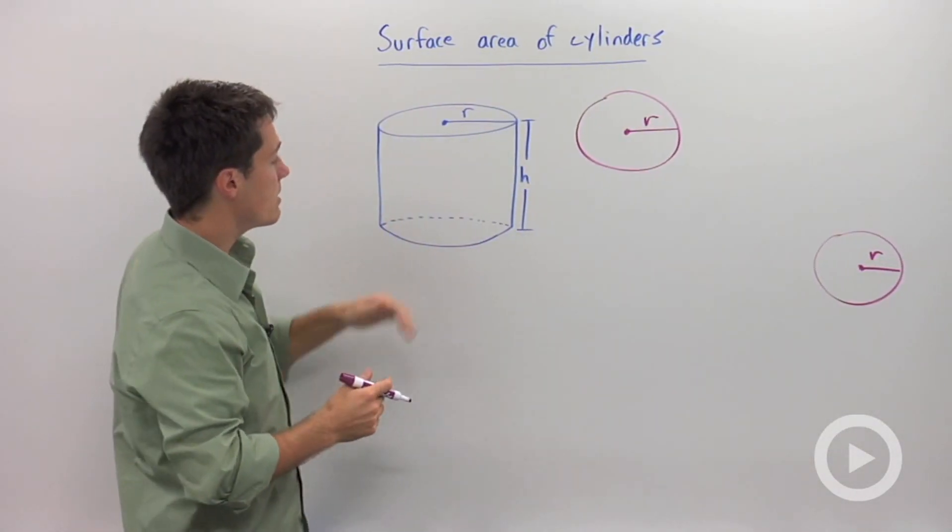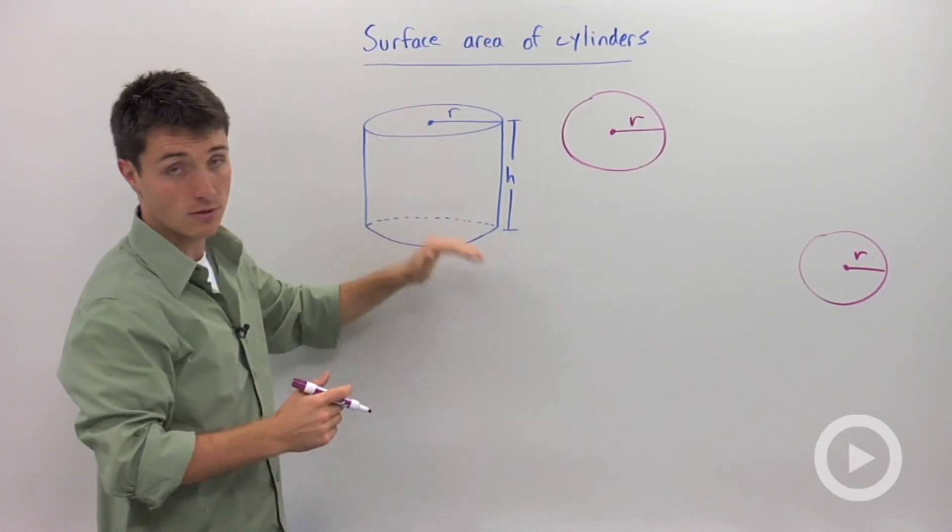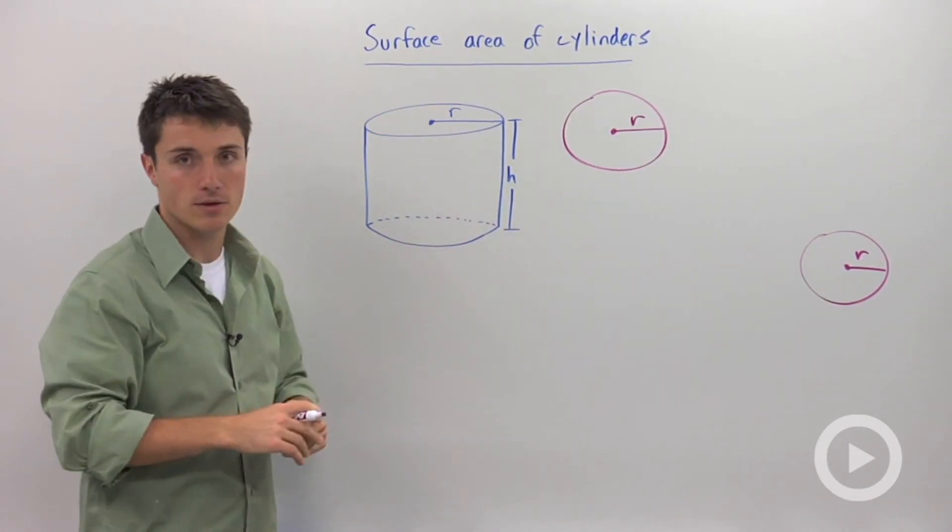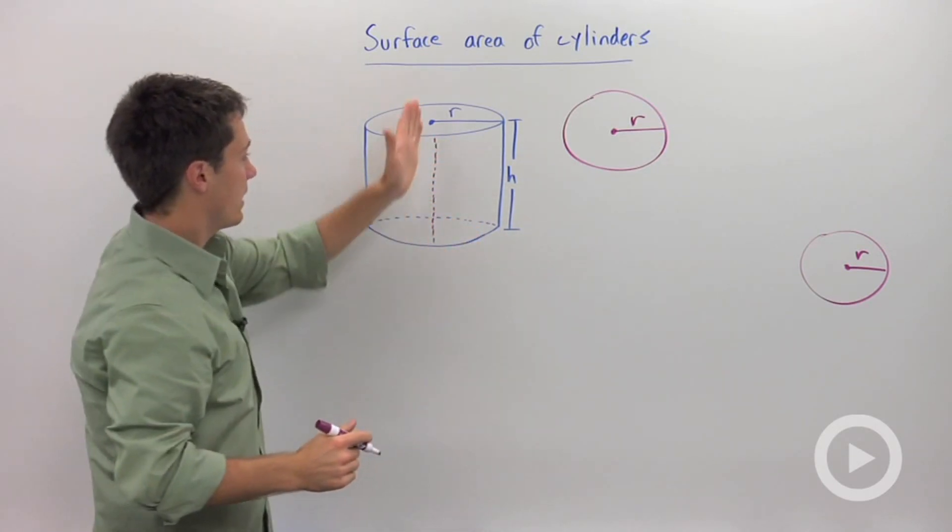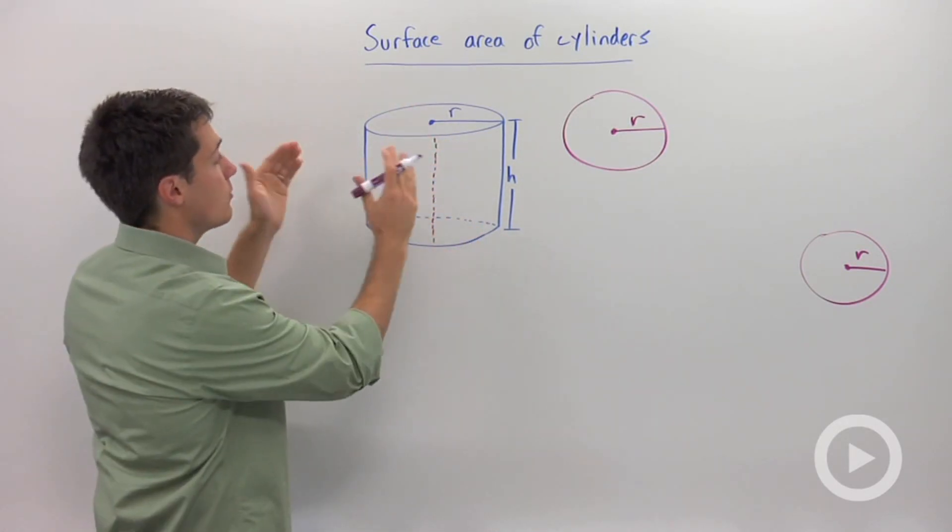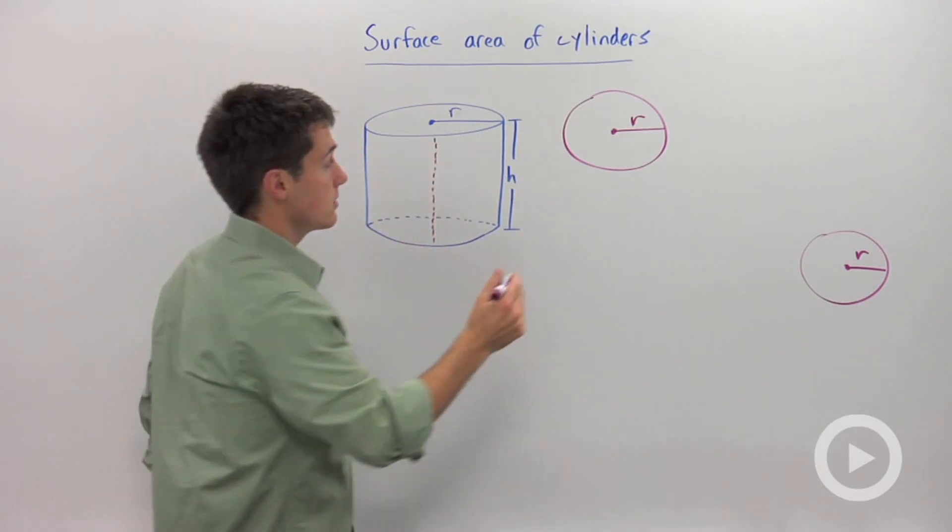Now this middle piece in between the two congruent circles, what is that going to look like? Well if you took a pair of scissors and made a cut right here and unraveled it, it would be a rectangle.